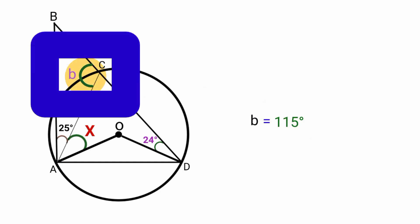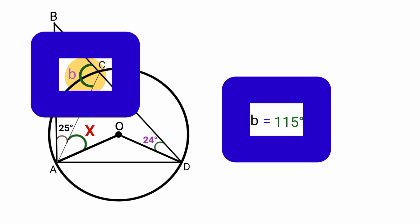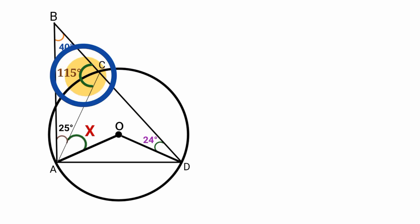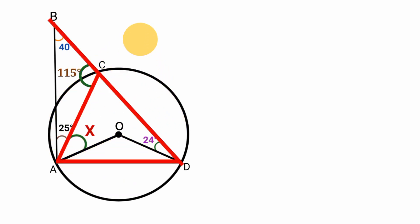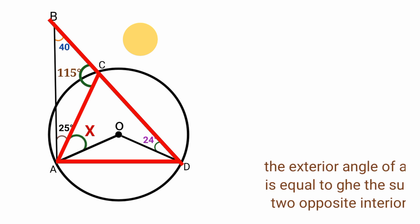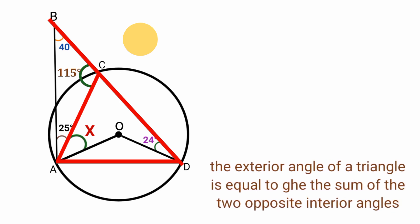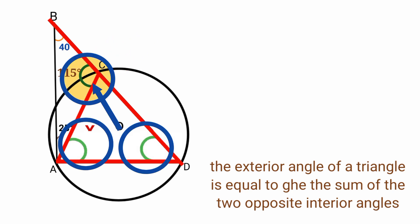So we can go ahead and replace B with 115 degree. Now if you look at this angle here, this angle is an exterior angle of this triangle, triangle ACD. And in geometry, the exterior angle of a triangle is equal to the sum of the two interior angles that are opposite to it. And that means the sum of this angle and this angle must be equal to this angle, which is 115.